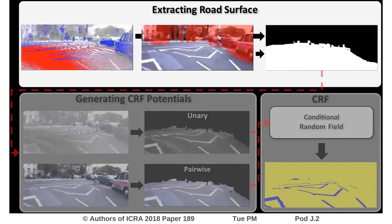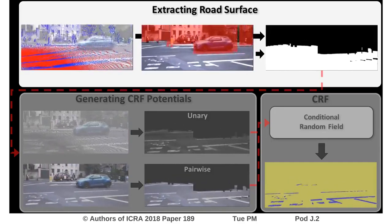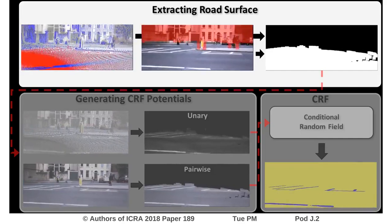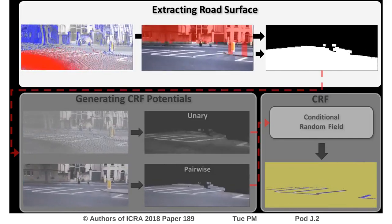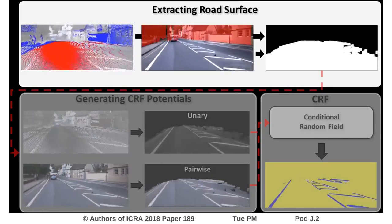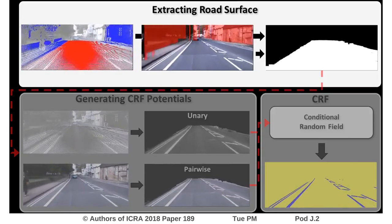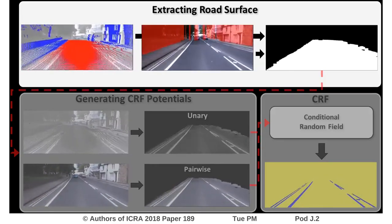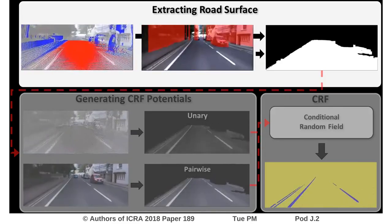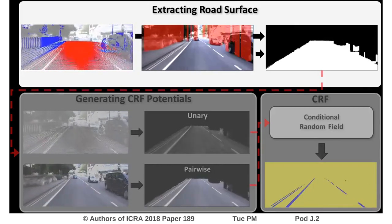First, we decrease our search domain by extracting the road surface from the image. To that end, we employ a surface normal region growing approach in the point cloud in combination with an obstacle detection mask based on a front scanning LiDAR.